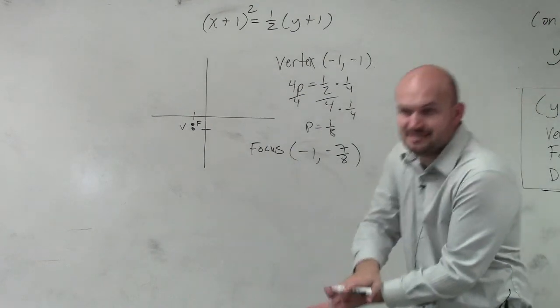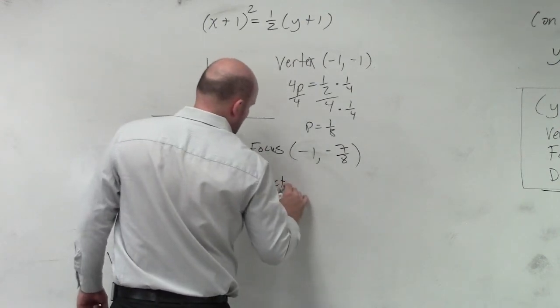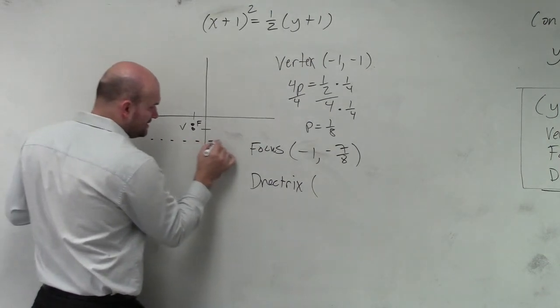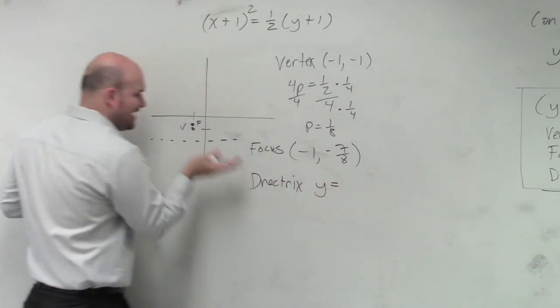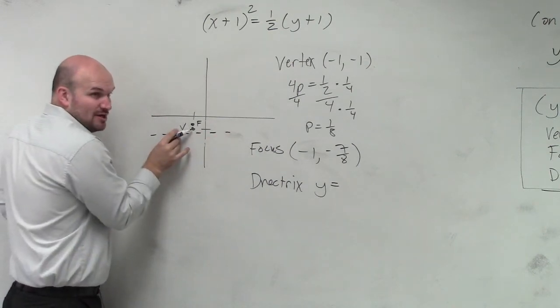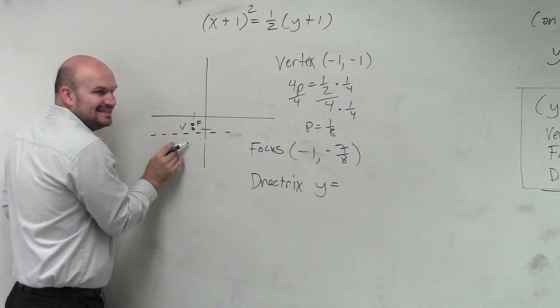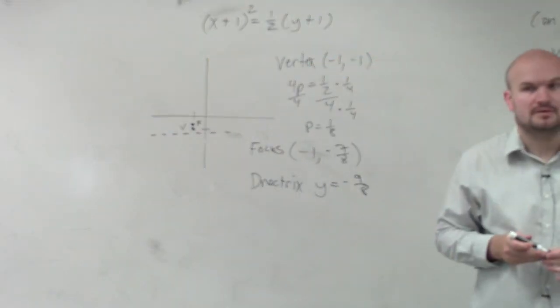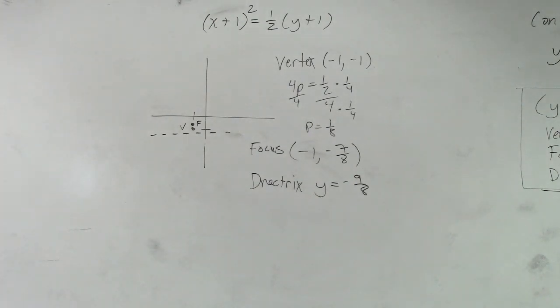Well, 8 is 8 eighths, so going up 1 eighth from negative 1 is negative 7 eighths. And then our directrix is a horizontal line. So therefore, it's not x equals, it's going to be y equals. And if negative 1 is negative 8 over 8, and you go an extra 1 eighth down, then you're at negative 9 over 8. And that's it.